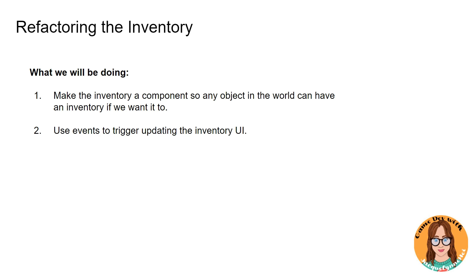Hey guys, Jacqueline here and welcome to part 20 of how to make a 2D RPG in Unity. In this video, we're going to be going over some theory that we're going to need to refactor the inventory. I've decided to go ahead and refactor the inventory and other parts of the game before we move forward, setting up any more mechanics, because I've noticed that our code's getting a little bit spaghetti and it's going to be really difficult to continue to set things up as we move forward. So I like to get these changes out of the way as soon as possible, so it's easier for us as we keep making this game.